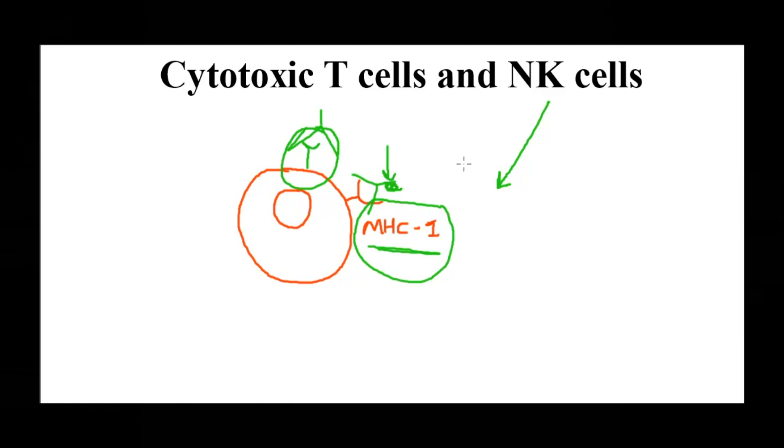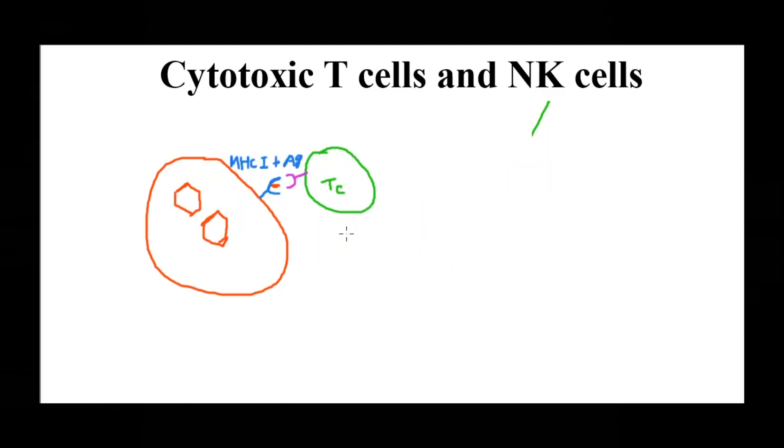In the case of TC cells, infected cells will take part of an antigen and display it on the surface on MHC 1. TC cells can recognize this MHC 1-antigen complex and will understand that this cell has been infected and this cell has to be killed.